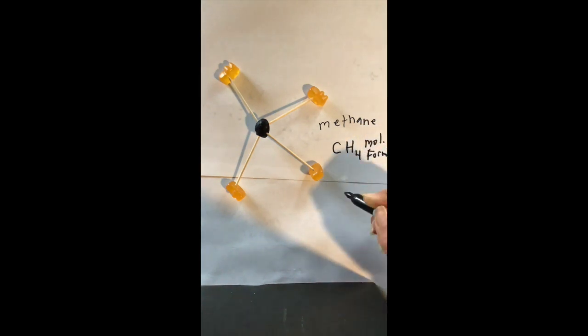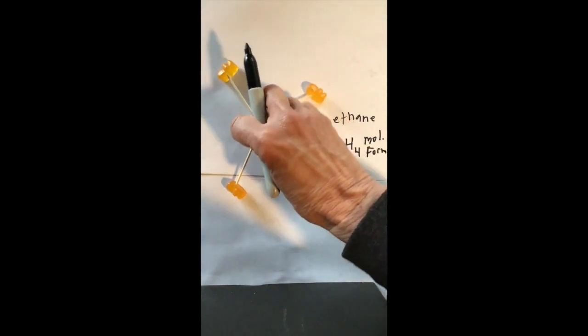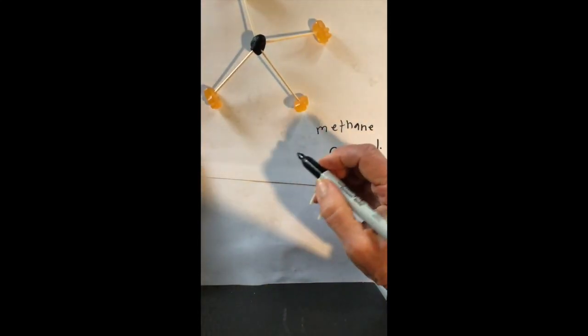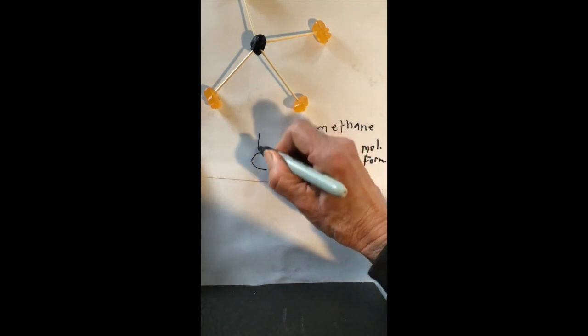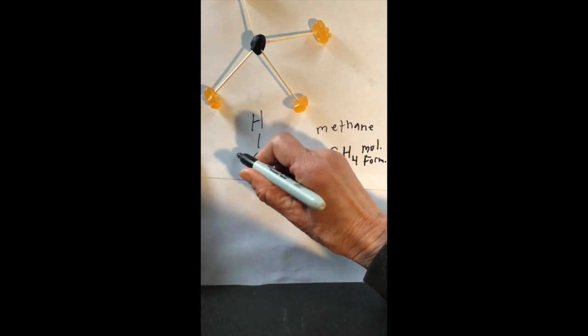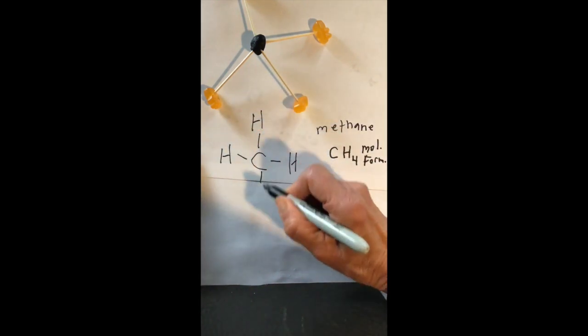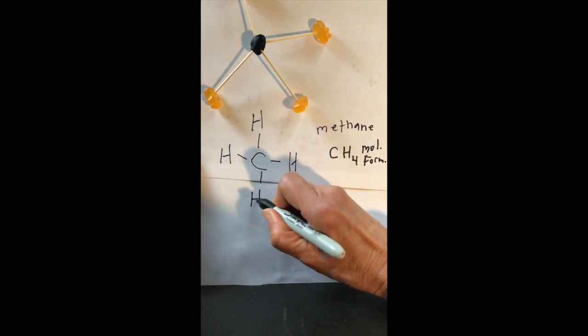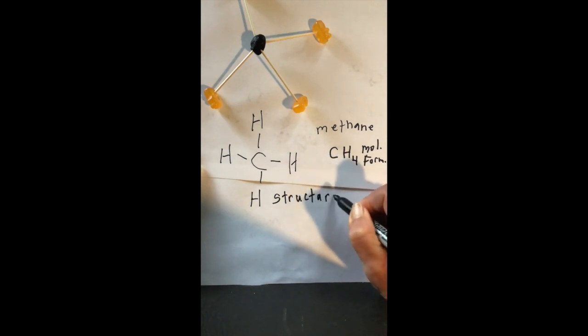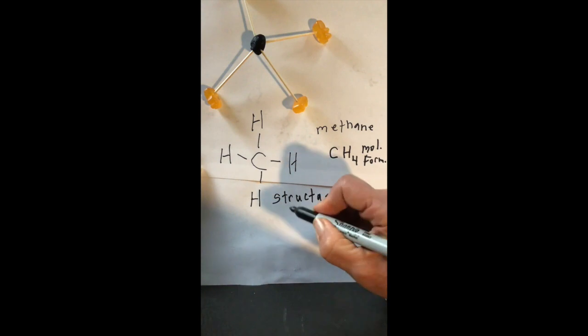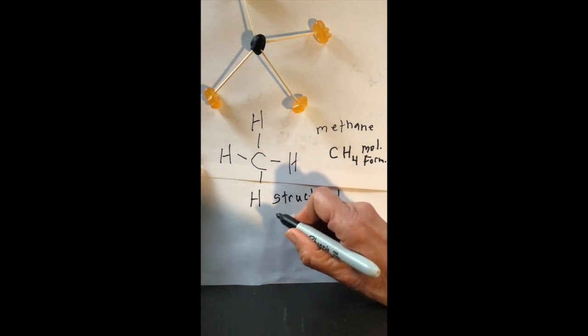Then you'll also be asked to draw the structural formula. Structural formula is showing all of the bonds between your atoms. So I would draw my lines to represent the bonds, the covalent bonds between each of my elements. So this is a structural formula. You can go through and follow the directions and create your different compounds using your candy to do this lab at home.